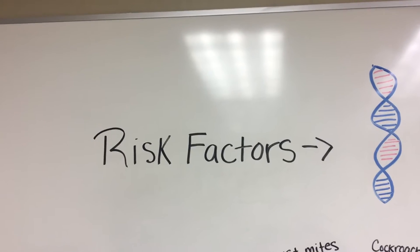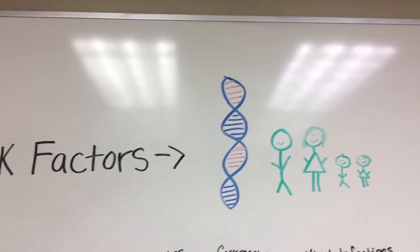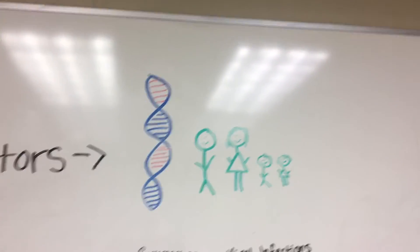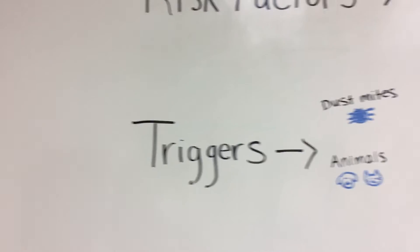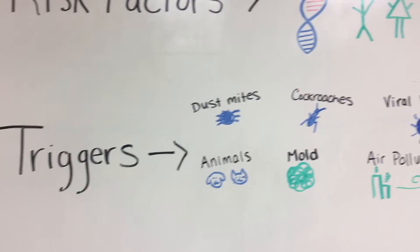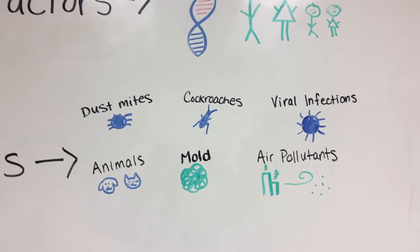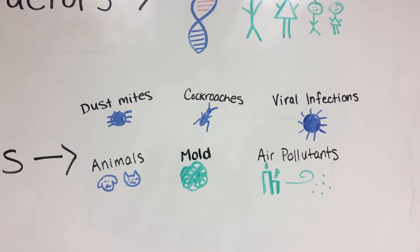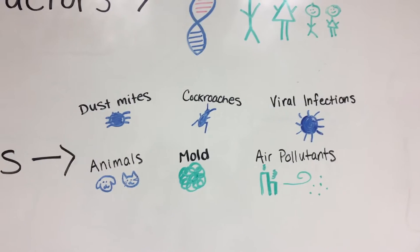The only risk factor for asthma is genetics, and some triggers for asthma include dust mites, cockroaches, viral infections, animals, mold, or air pollutants.